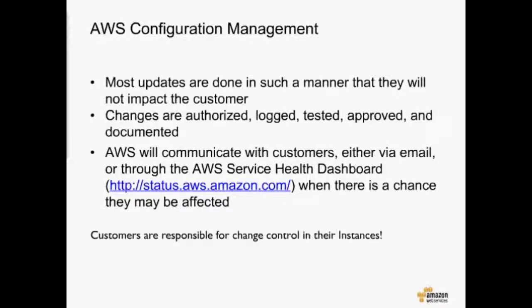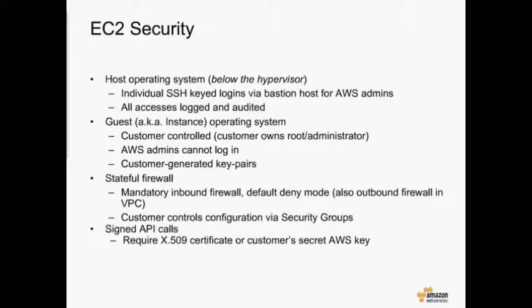Moving up the stack a little bit into the EC2 service itself — when we look at securing that service, we break it into two parts: host security and guest operating security. The host operating system — that's the virtualization layer — is our responsibility to manage, and we do that through specially designed Bastion hosts. A small number of people have access, authenticating using individual SSH key pairs with multi-factor authentication. All access is logged and audited. The guest operating system is completely under control of our customers — we don't have any access to your administrator account or root login.